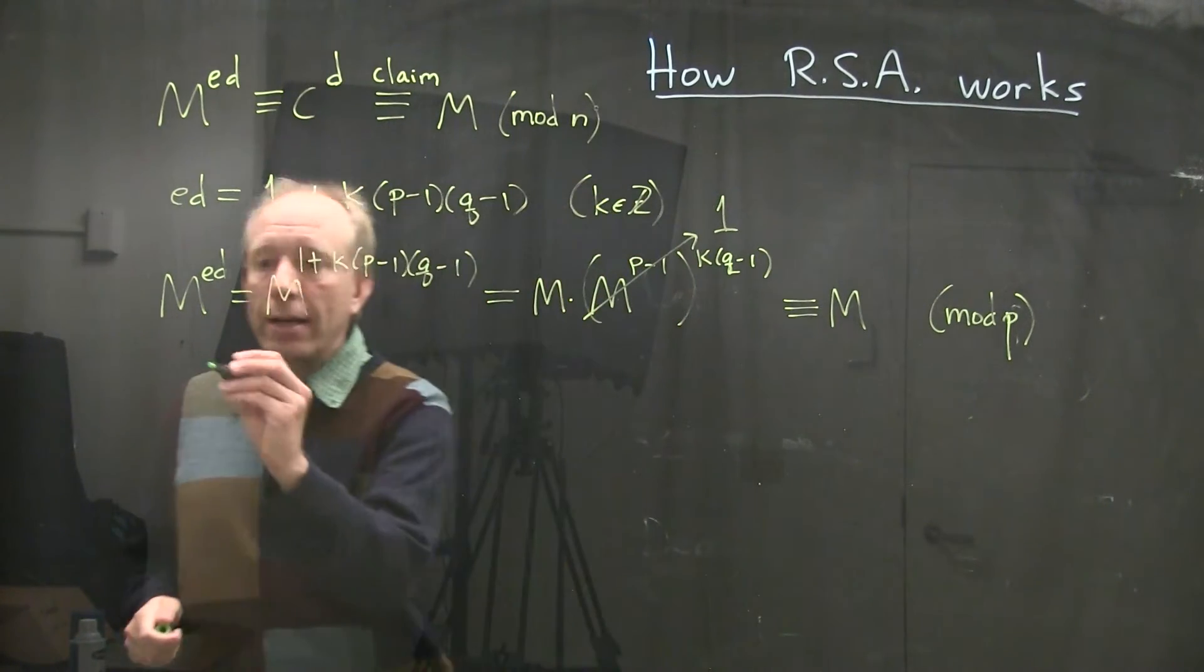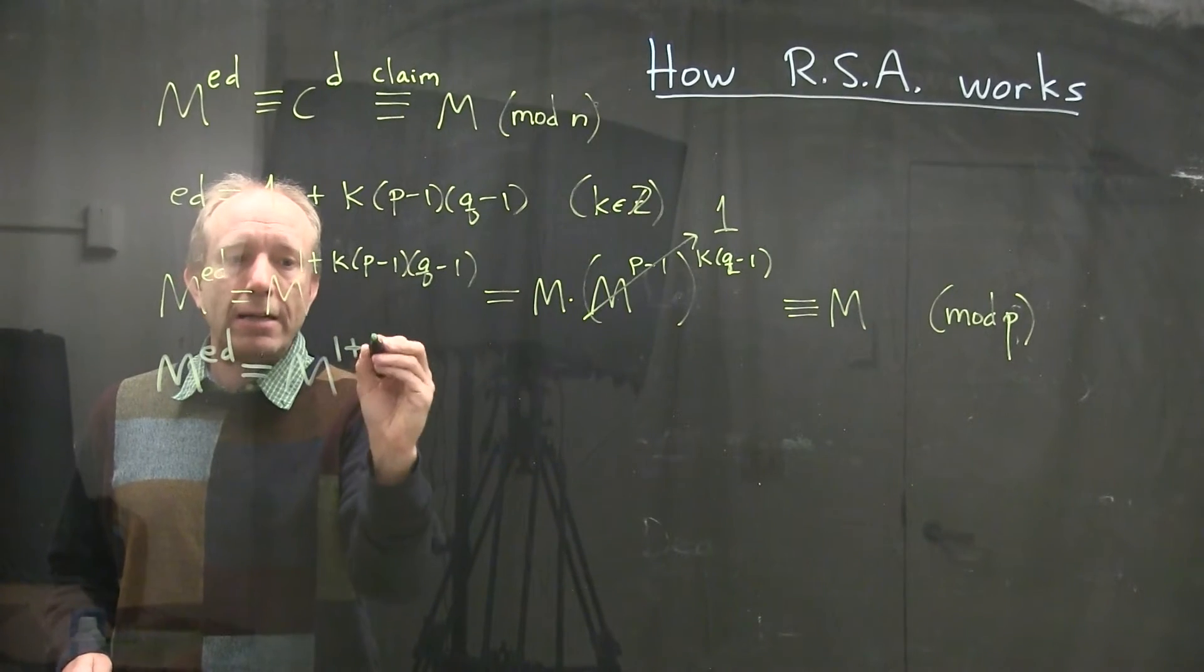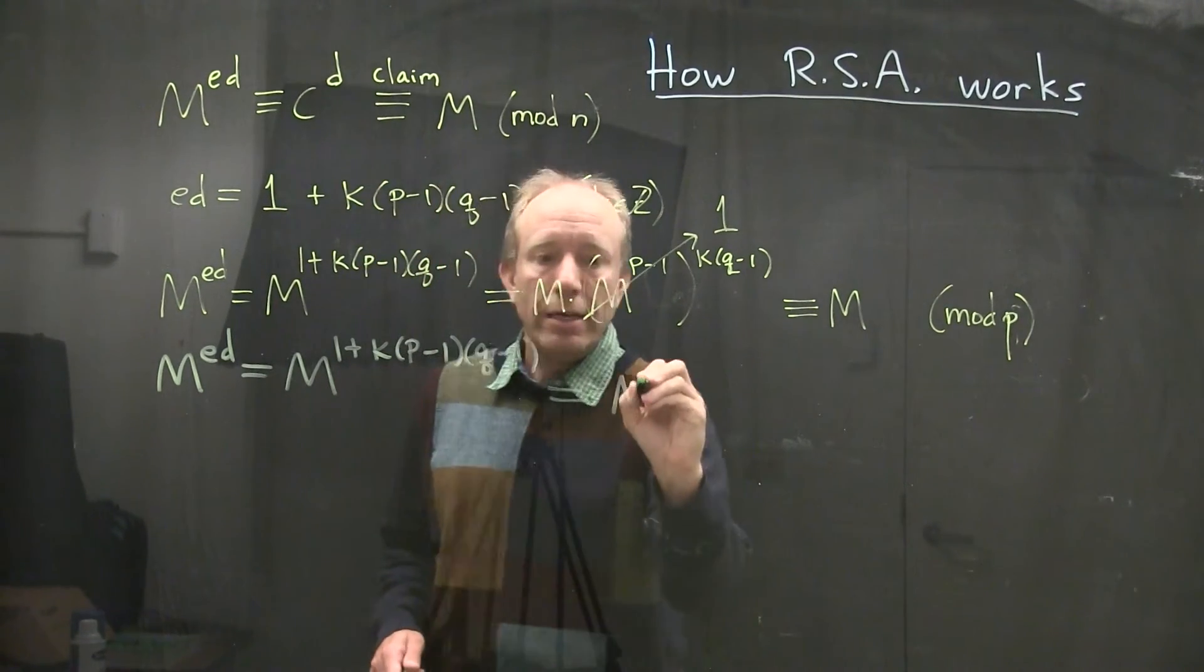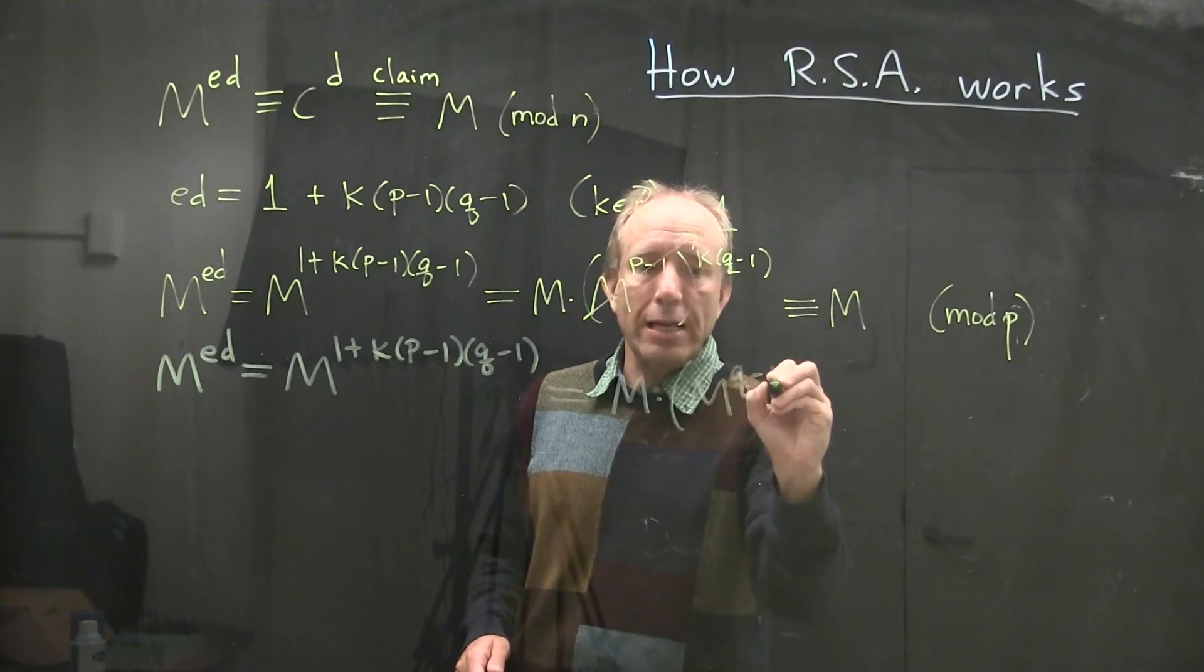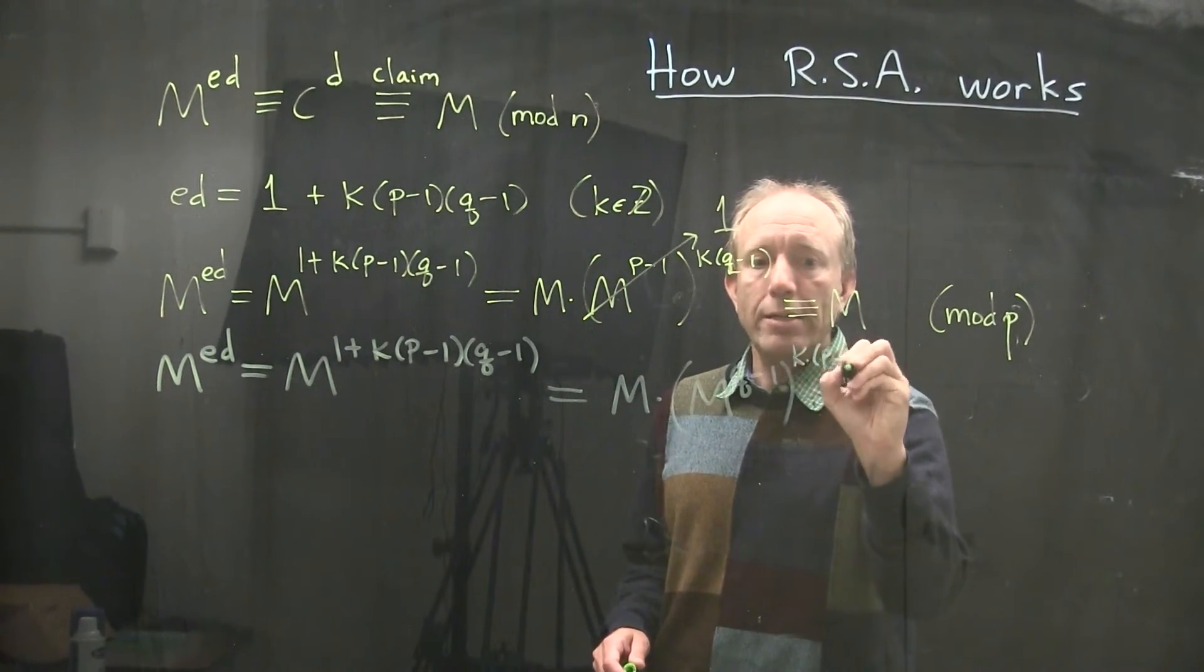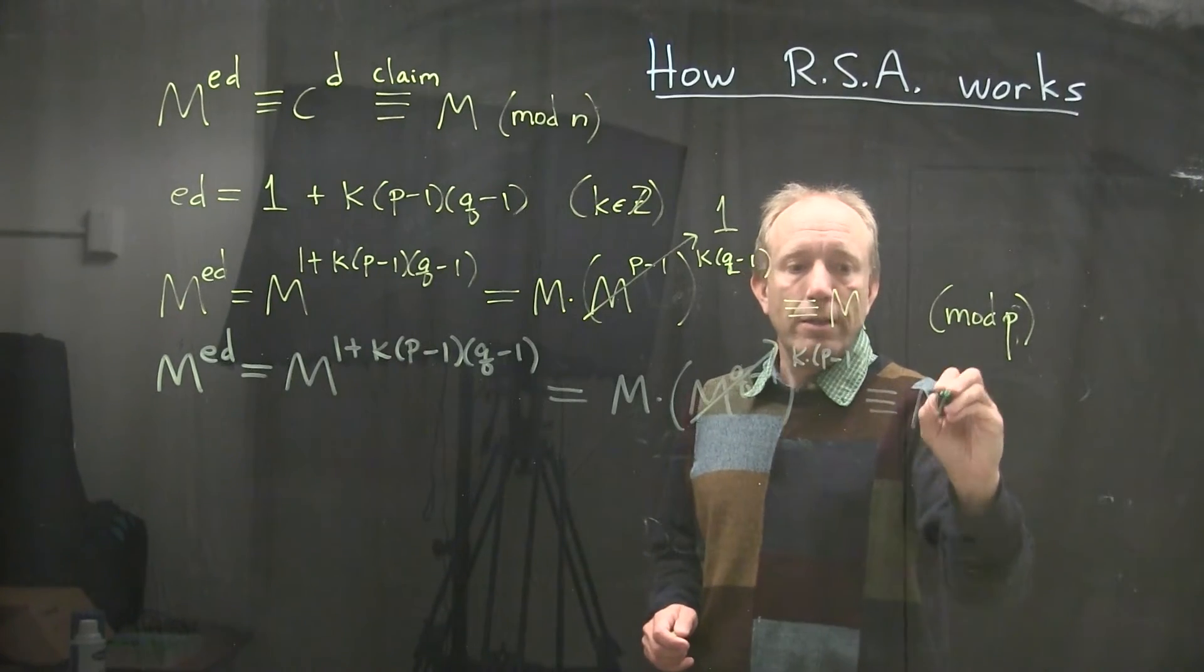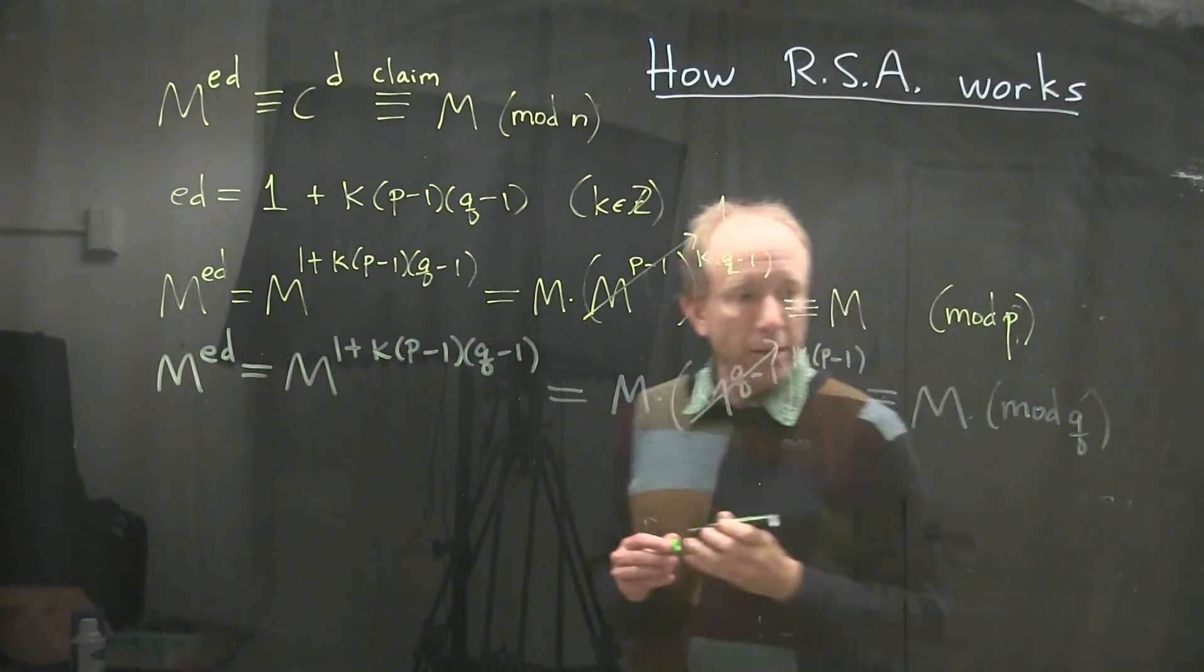On the other hand, I can do the same exact calculation. I can set it up exactly the same way, except I can do it this time in mod Q. And in so doing I'm going to actually isolate M to the Q minus 1 power times K to the P minus 1. And in mod Q, well again, this reduces to M by Fermat's Little Theorem.